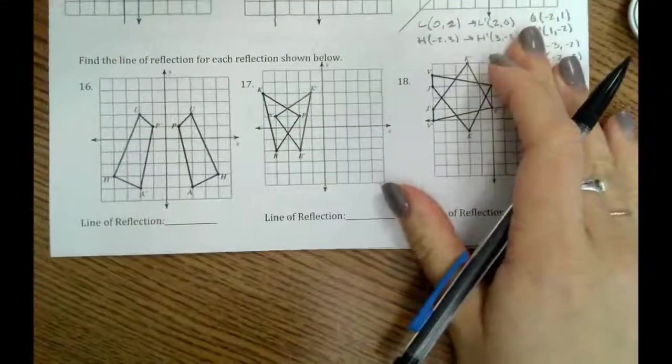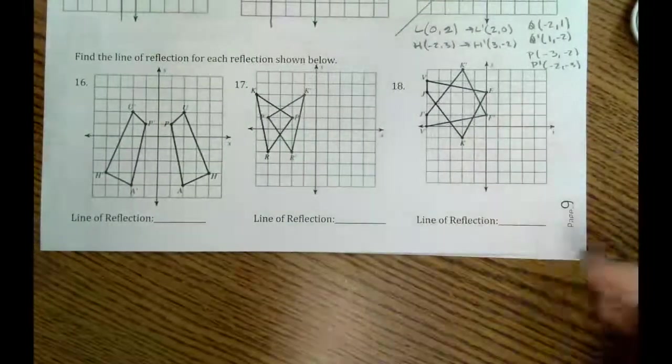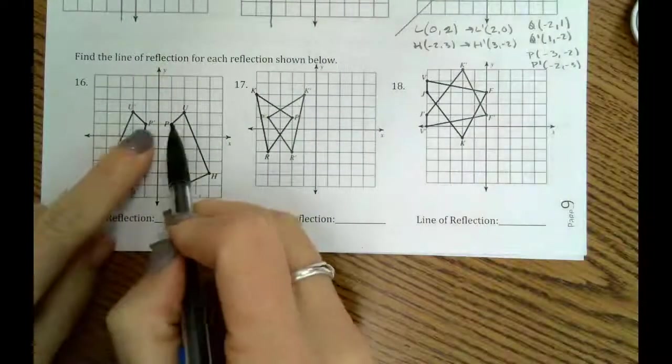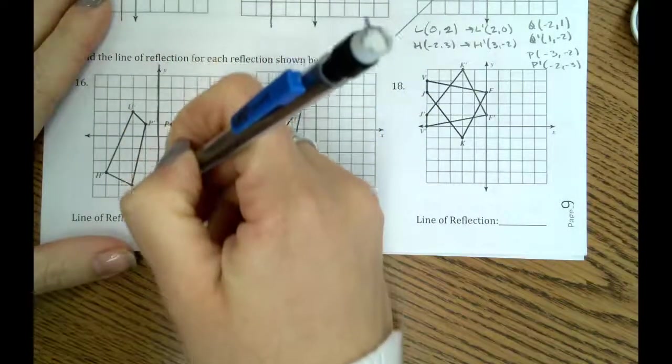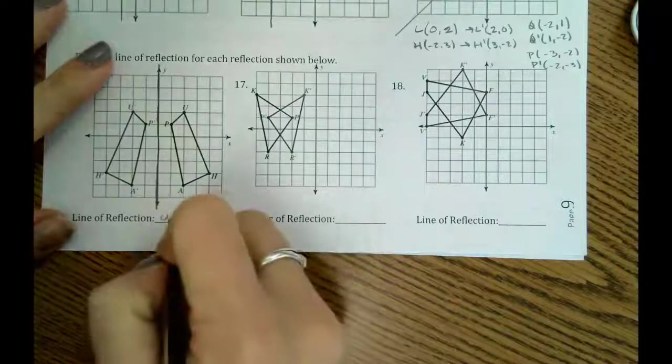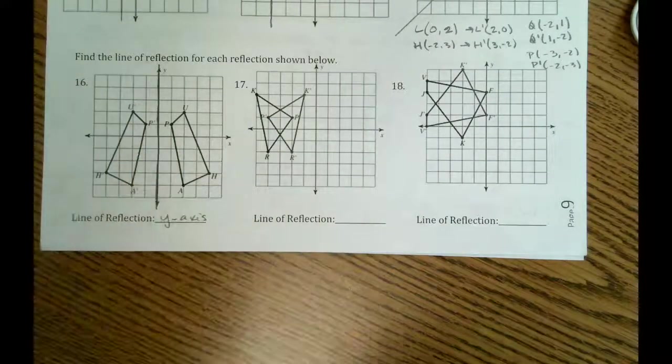Okay, so here we're just trying to find the line of reflection. So if we look here, about halfway in between these two will be our line of reflection, which looks like it's our y-axis. And so if we count away, those would all work.